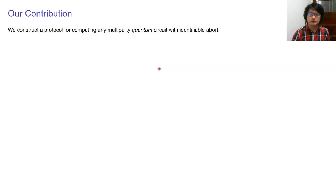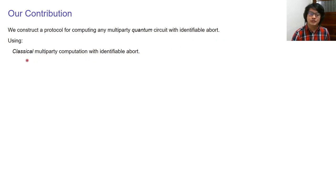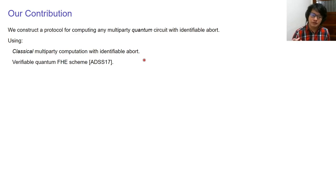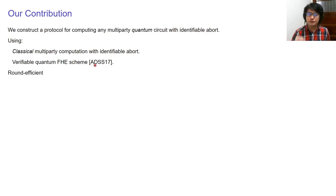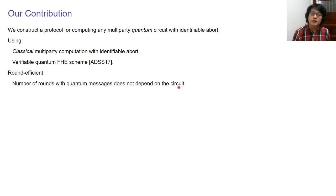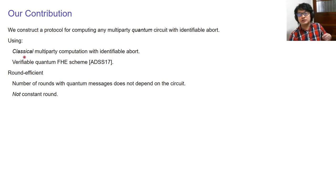This is exactly our contribution. We construct a protocol for computing any multiparty quantum circuit with identifiable abort, using two primitives: classical multiparty computation with identifiable abort, and a verifiable quantum fully homomorphic encryption scheme proposed and constructed by Alagic et al. Our protocol is also round-efficient, in the sense that the number of rounds with quantum messages does not depend on the circuit — though this does not mean constant rounds, since the round count still depends on the round complexity of the classical MPC, the number of parties, and the security parameter.